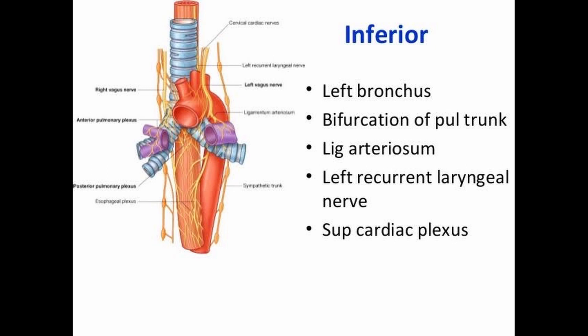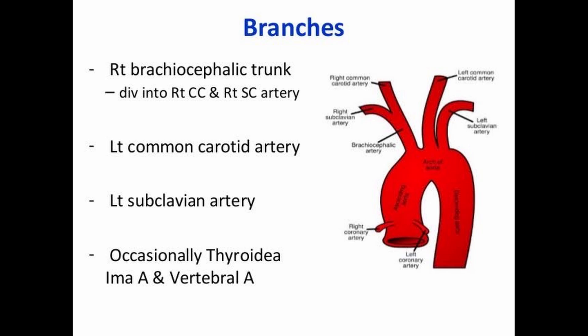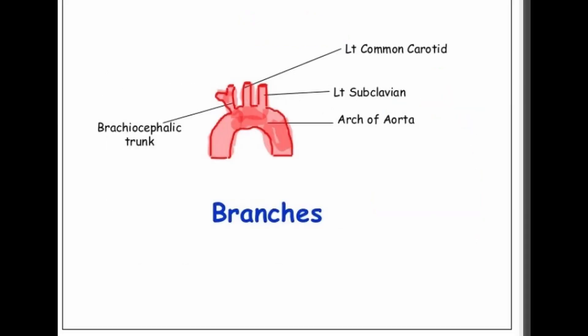Now we discuss the branches of the arch of aorta. The branches are: the right brachiocephalic trunk, which divides into the right common carotid artery and the right subclavian artery; the left common carotid artery; and the left subclavian artery. Occasionally there is also a thyroid ima artery and the vertebral artery.